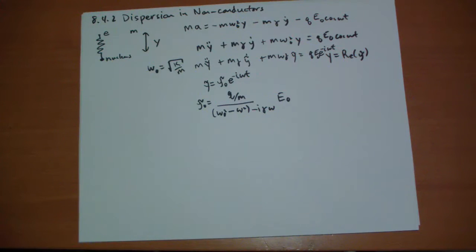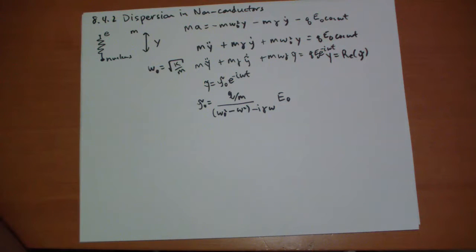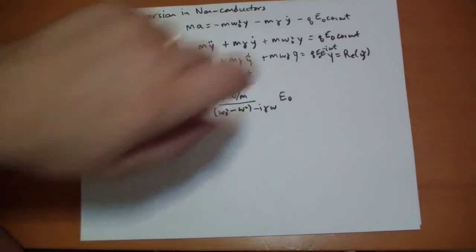So that's the position, that's the maximum of that position. You'll notice that there's an I in the bottom here. That means that there is a phase shift between the Y and the E field that's driving it.